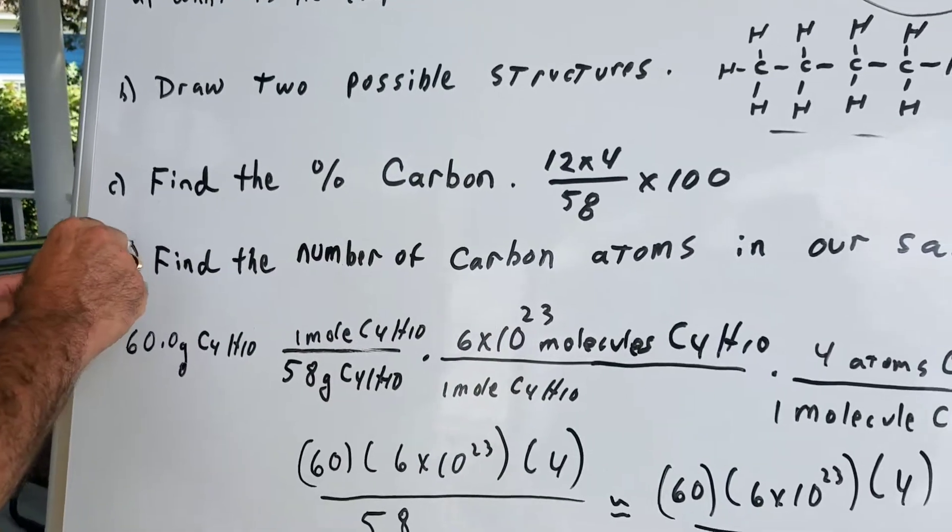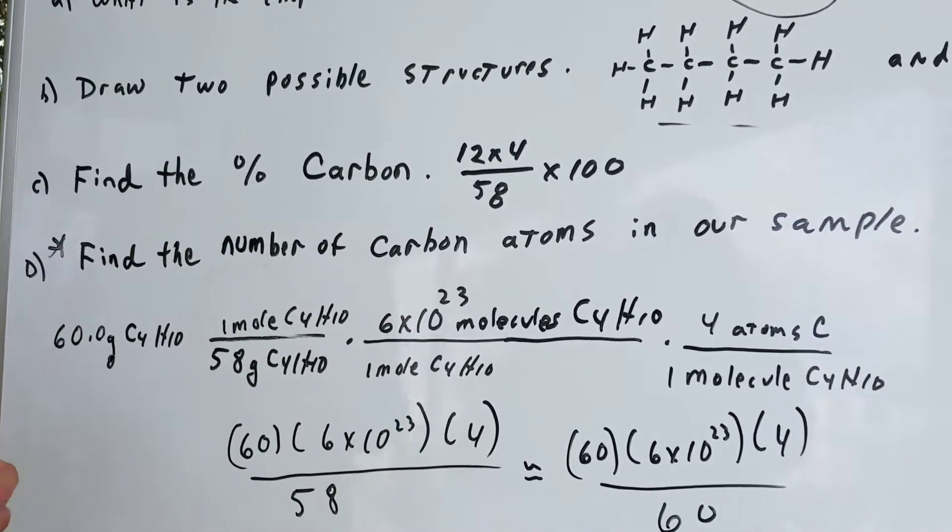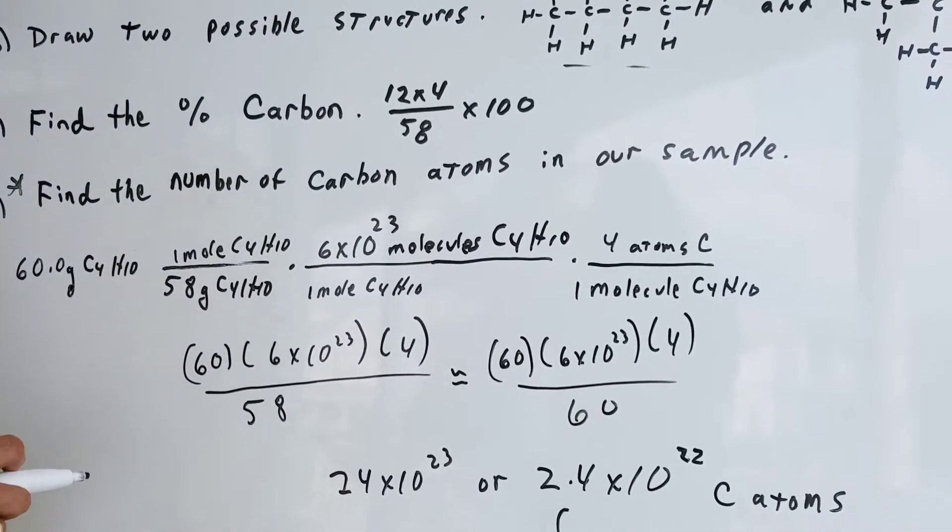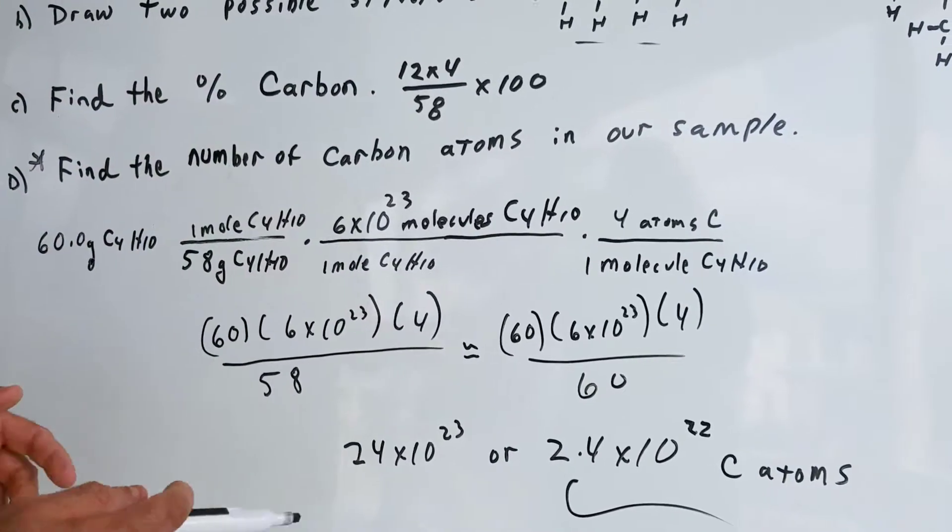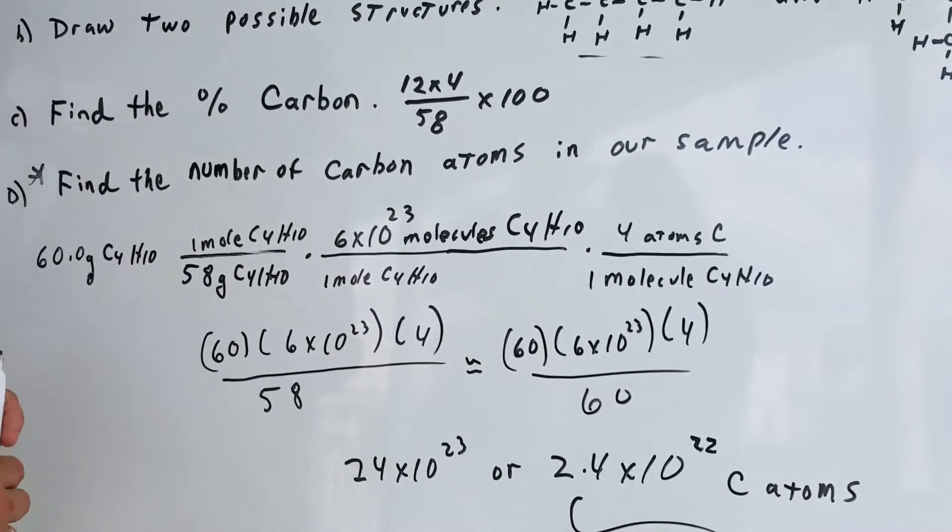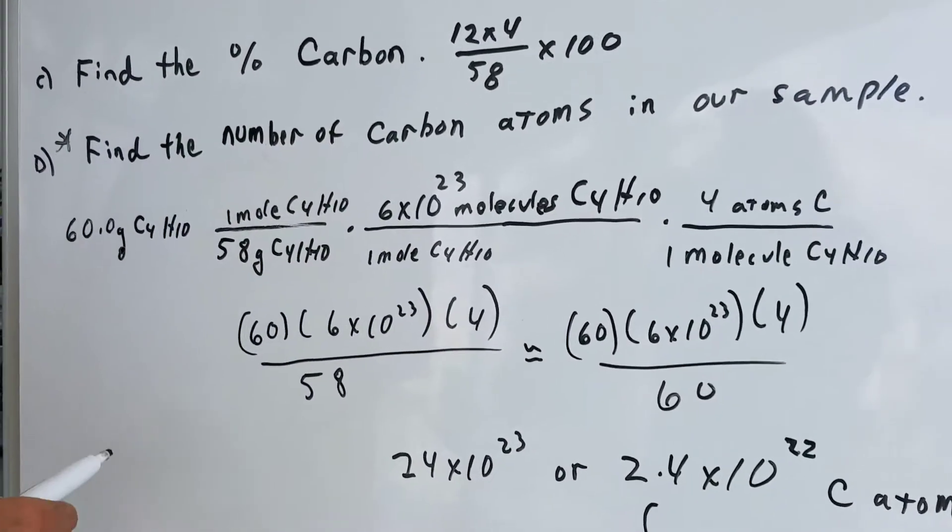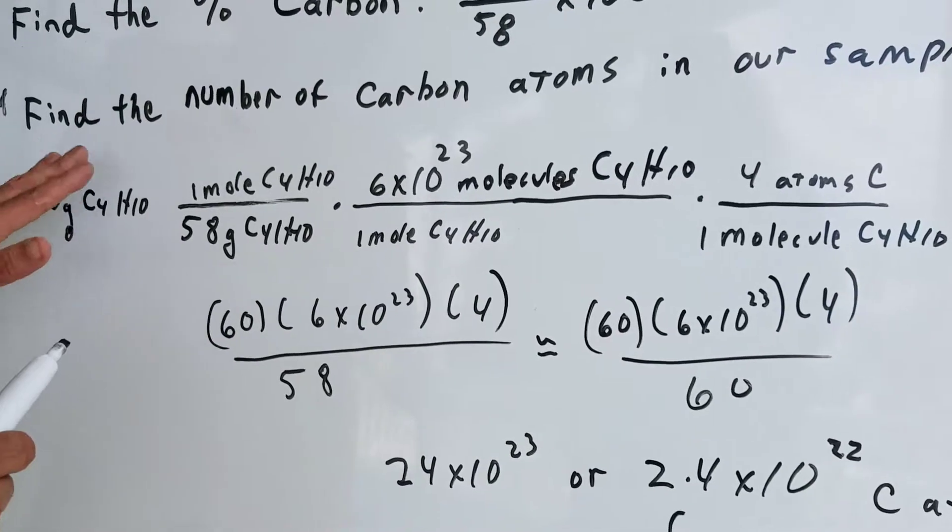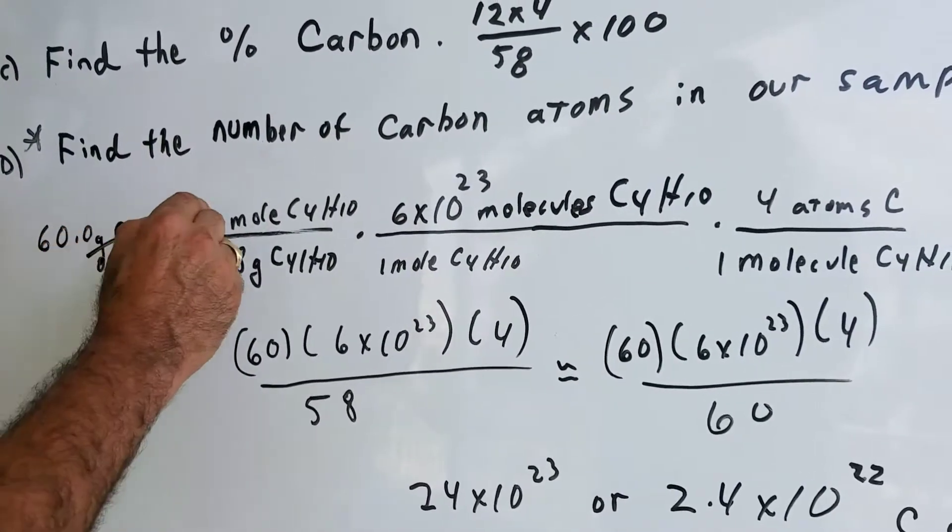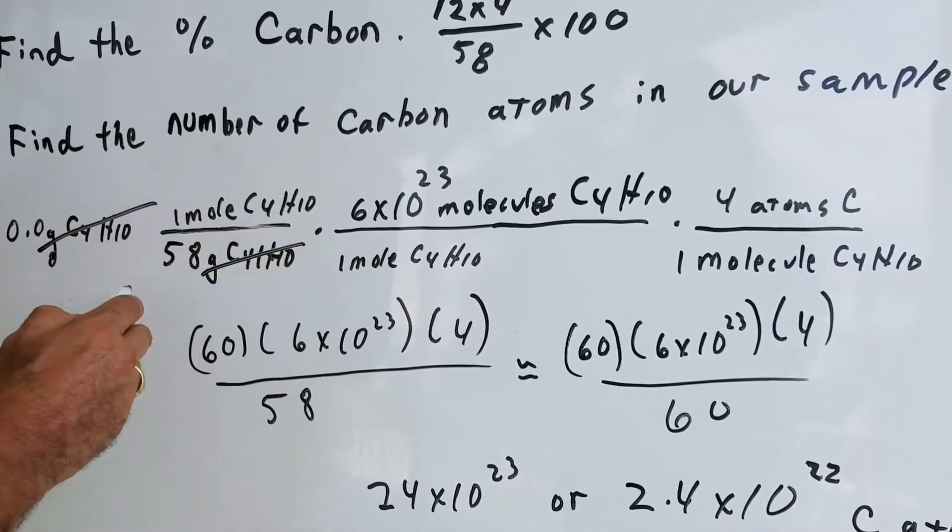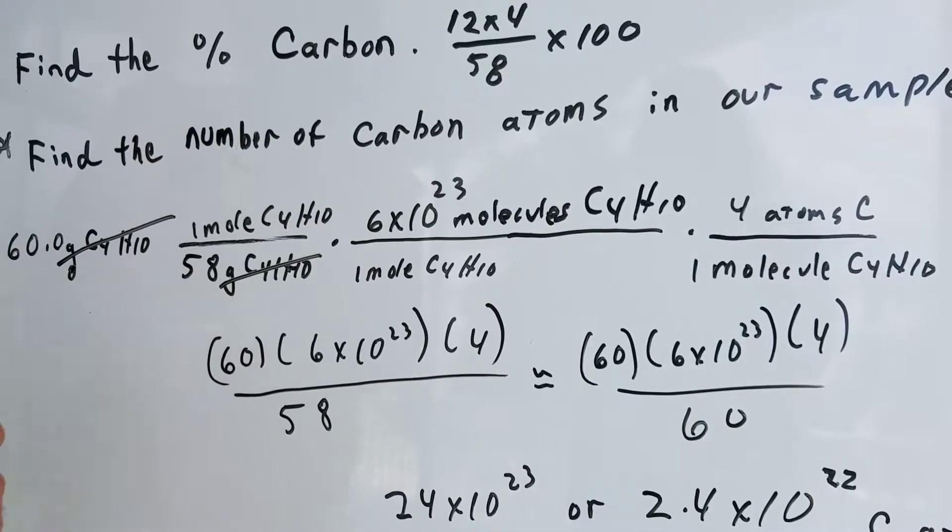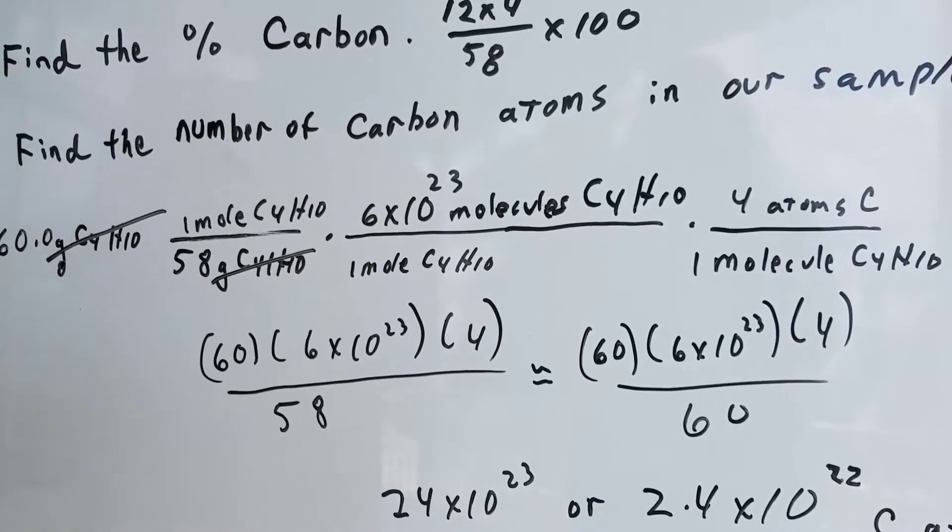Here's the hard one. This is a challenging one. Find the number of carbon atoms in the sample. Now, I'm going to hold your hand and go through this. I know you would like to do this with me, nice and slow, so I'll kind of coach you through it. We have 60 grams of C4H10. The first thing is we're going to convert it into moles by dividing by the weight. So one mole of C4H10 is 58 grams.